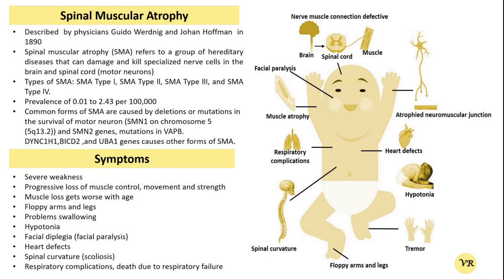Diagnosis of SMA typically involves a combination of clinical assessment, genetic testing, and sometimes additional tests. A doctor will review the patient's medical history. Common symptoms include muscle weakness, reduced muscle tone, difficulty in movement, and respiratory problems. Symptoms can range from mild to severe, and the age of onset is one important factor in determining the type of SMA.